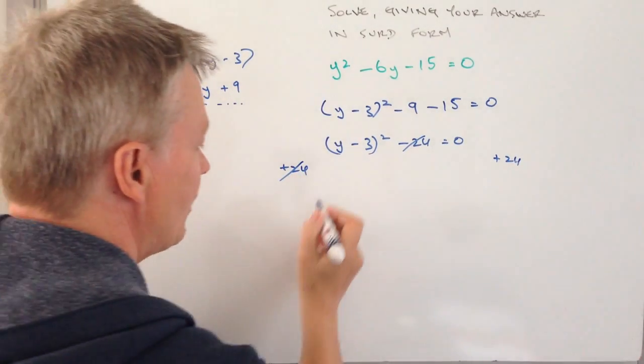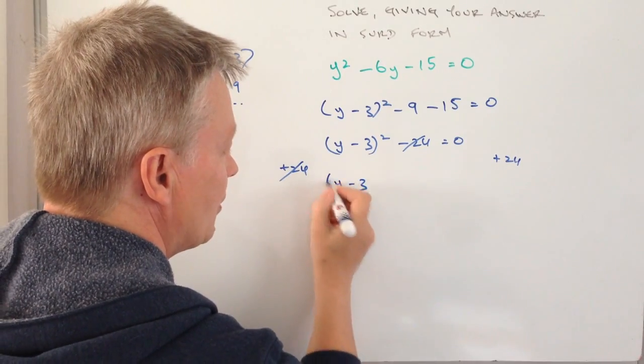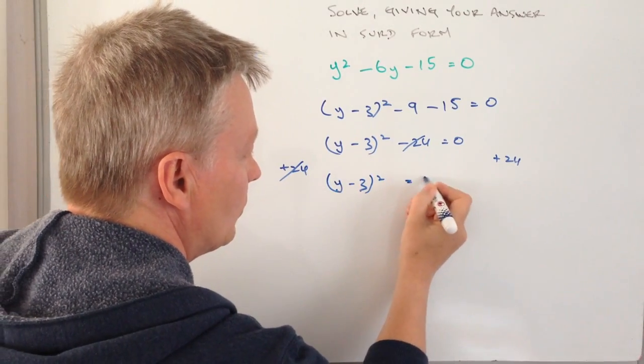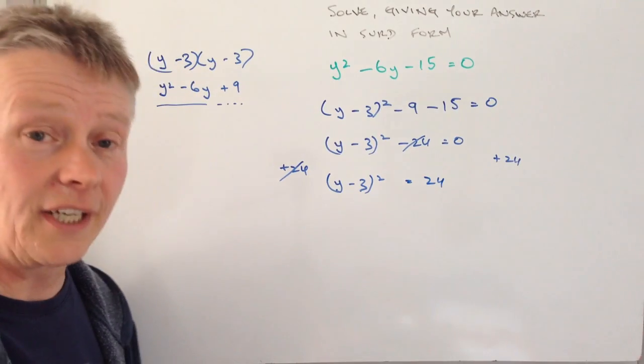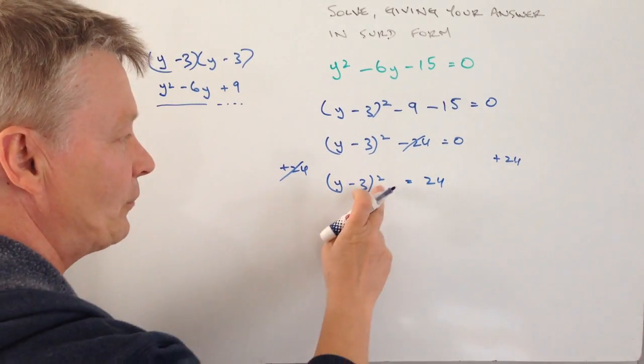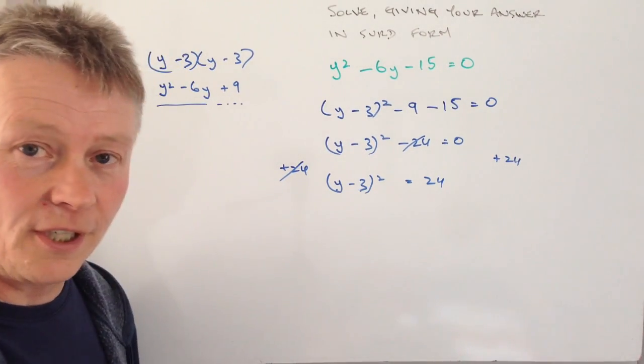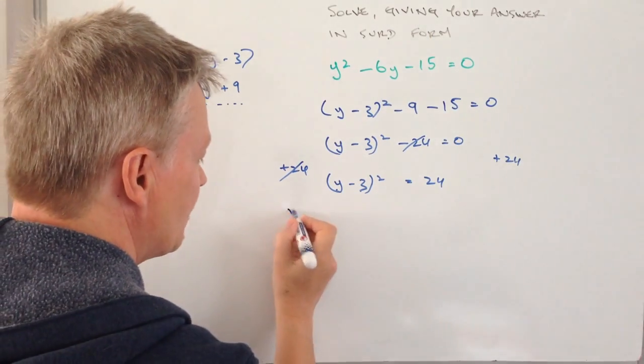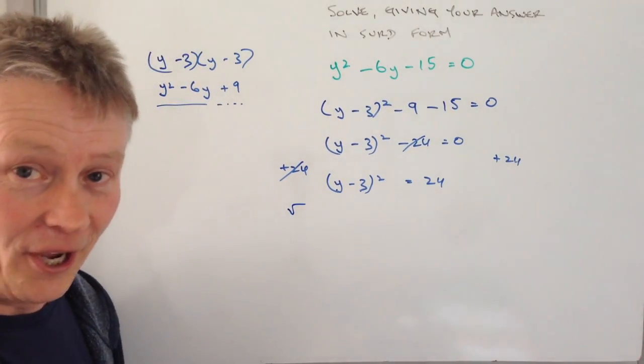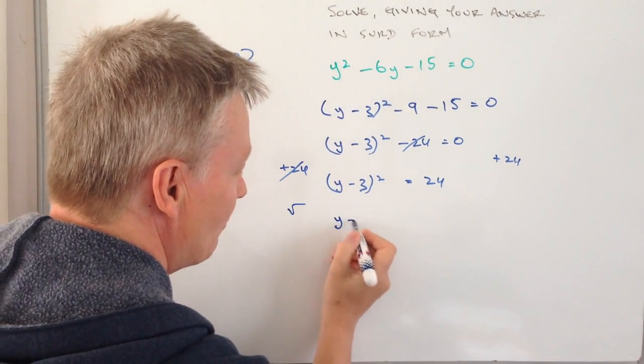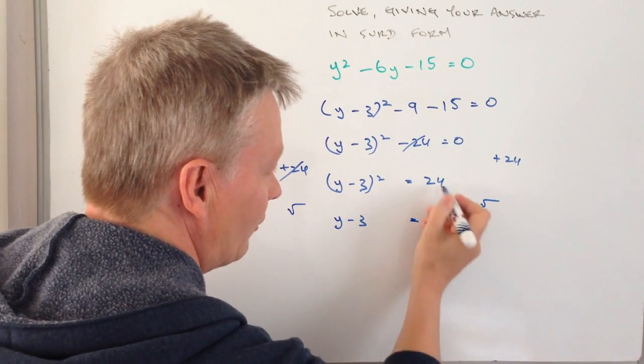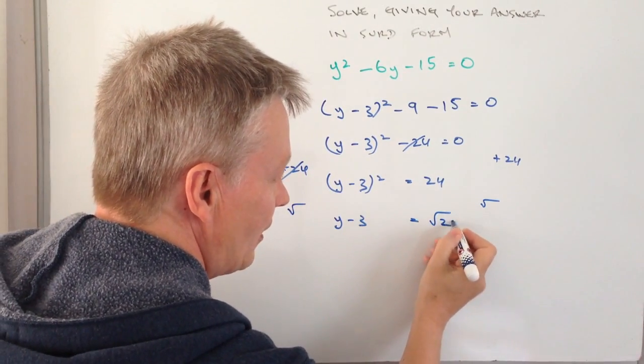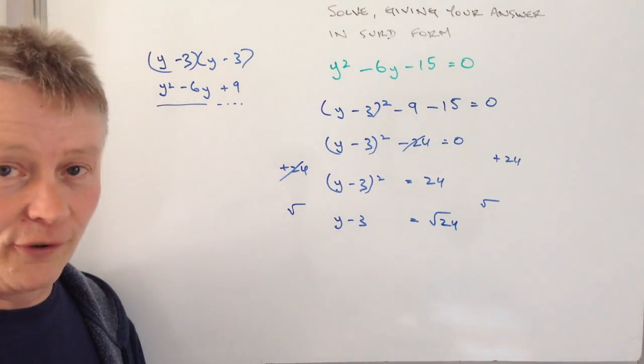and on the left hand side I get y minus 3 squared equals 24. Well that's looking a little bit better. Not so happy about this squared term, I'm going to square root it. Because if I square root a squared term I get left with y minus 3. On this side I'm going to square root it, because I have to do it to both sides, that becomes the square root of 24.